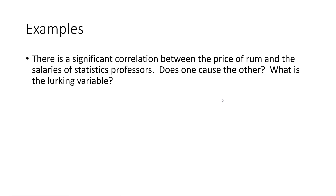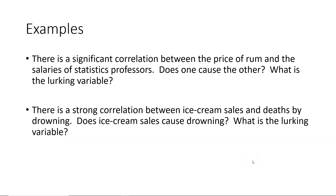Let's look at some examples from the Section 8.1 alternate textbook reading. In the first example, there is a significant correlation between the price of rum and the salaries of statistics professors — but one doesn't cause the other. The lurking variable is either inflation or deflation, which explains why both rise or fall together. In the second example, there is a strong correlation between ice cream sales and deaths by drowning, but ice cream sales don't cause drowning. The lurking variable is outside temperature — when it goes up, both ice cream sales and drowning deaths go up, and when temperature drops, both drop correspondingly.